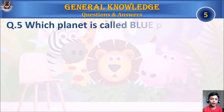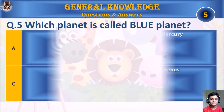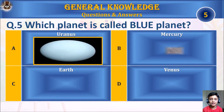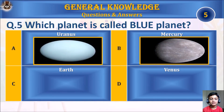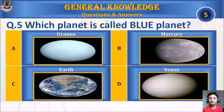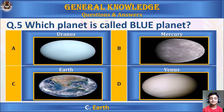Question 5: Which planet is called the blue planet? A. Uranus, B. Mercury, C. Earth, or D. Venus. Your time starts. The answer is C. Earth.